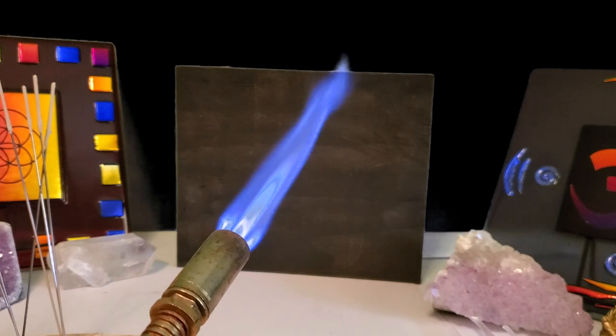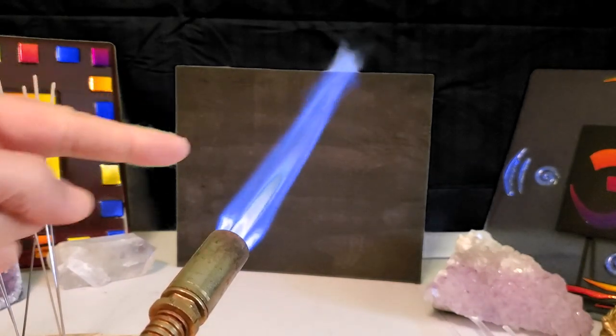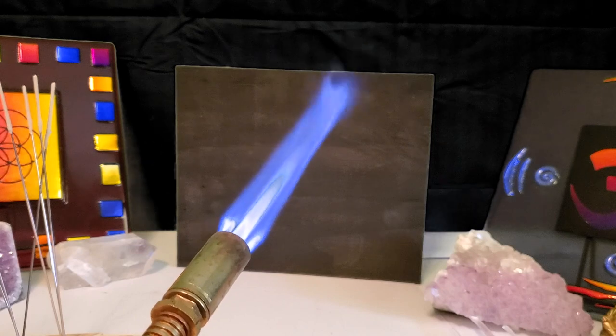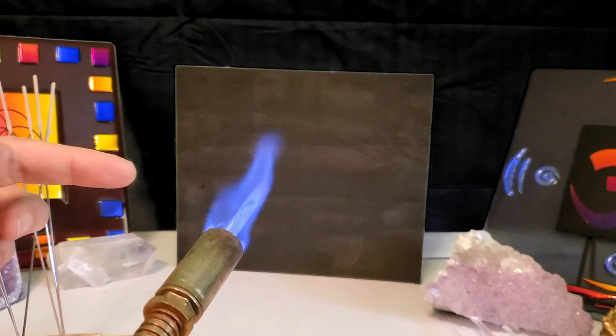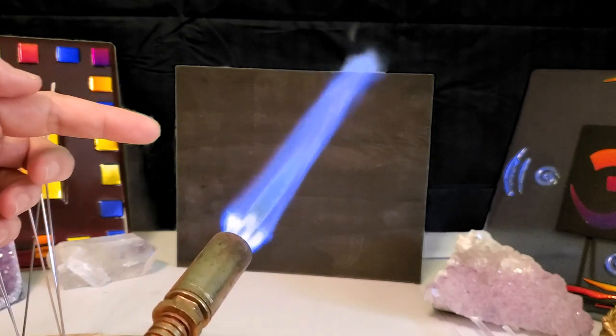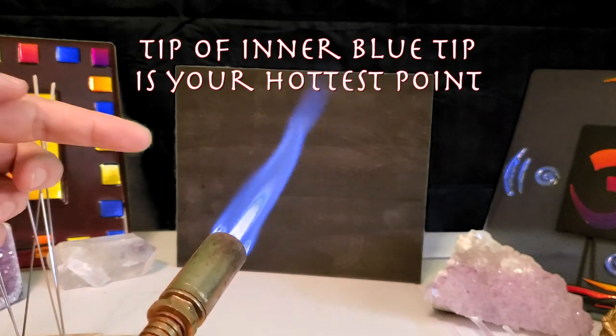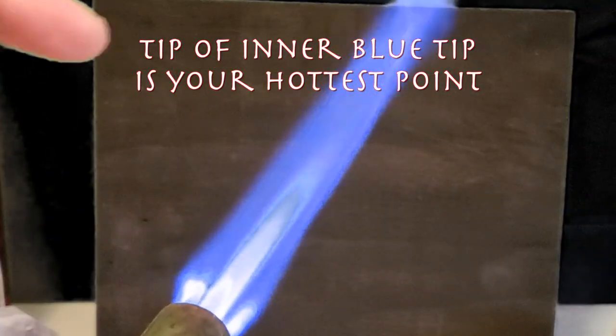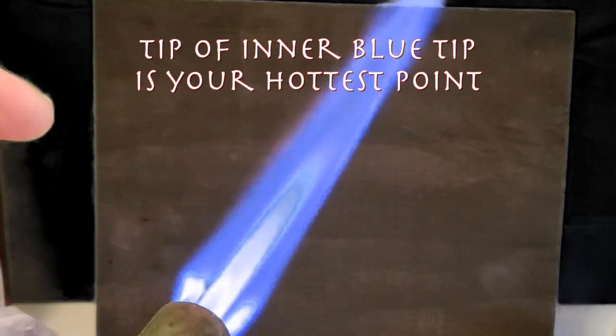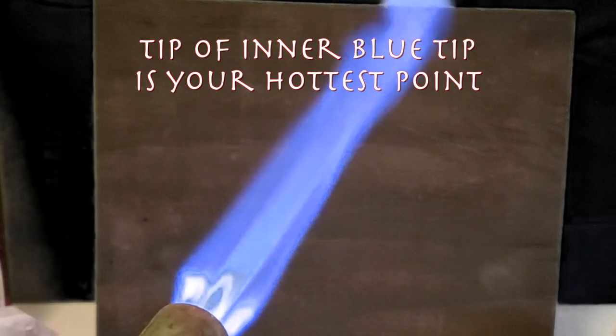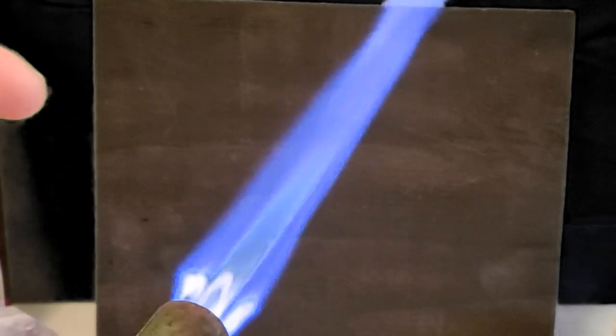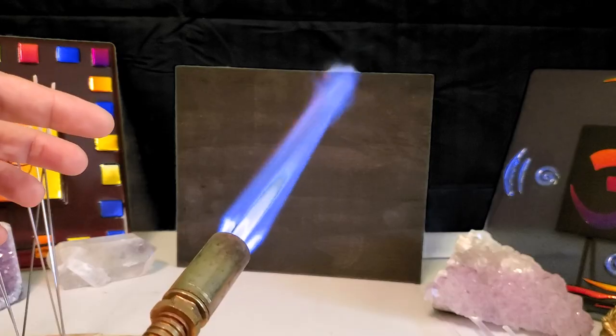So you want to get your flame, the blue tip there, where it's not all distorted when you have it too much. Turn it down until you get a defined blue tip in the middle, the middle blue tip. And you know, we're using a $15 torch, so do your best.